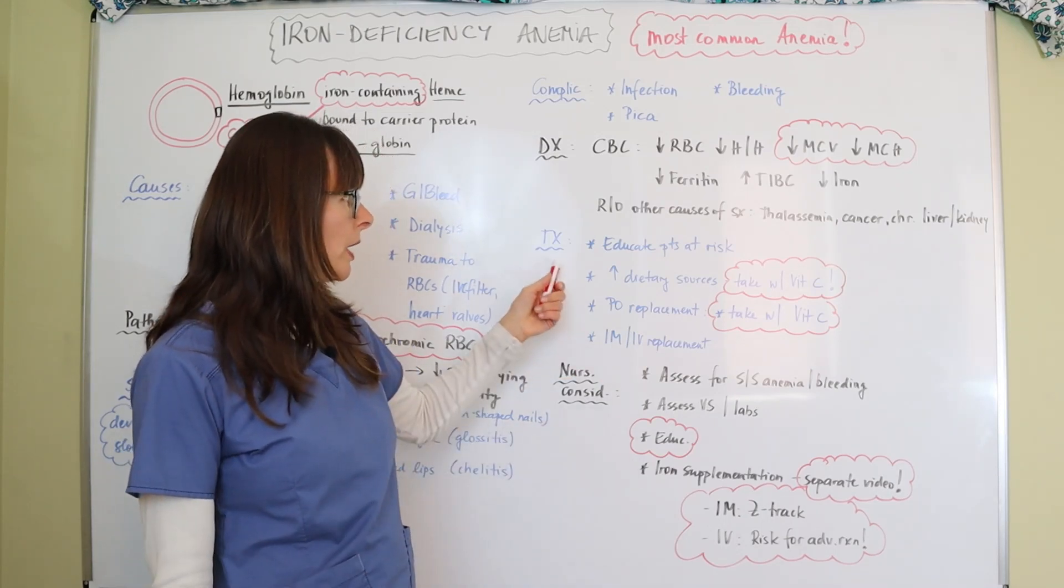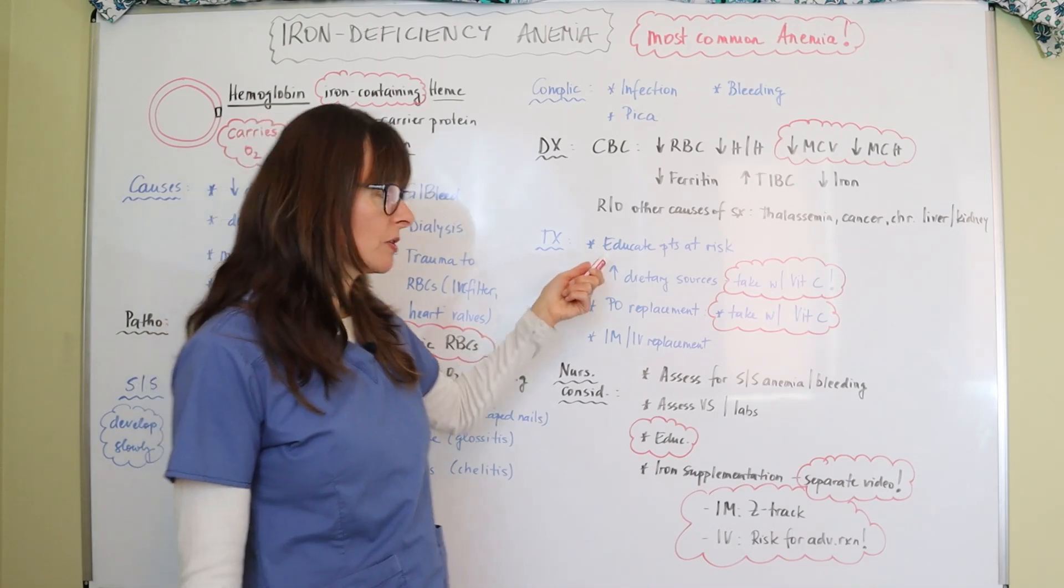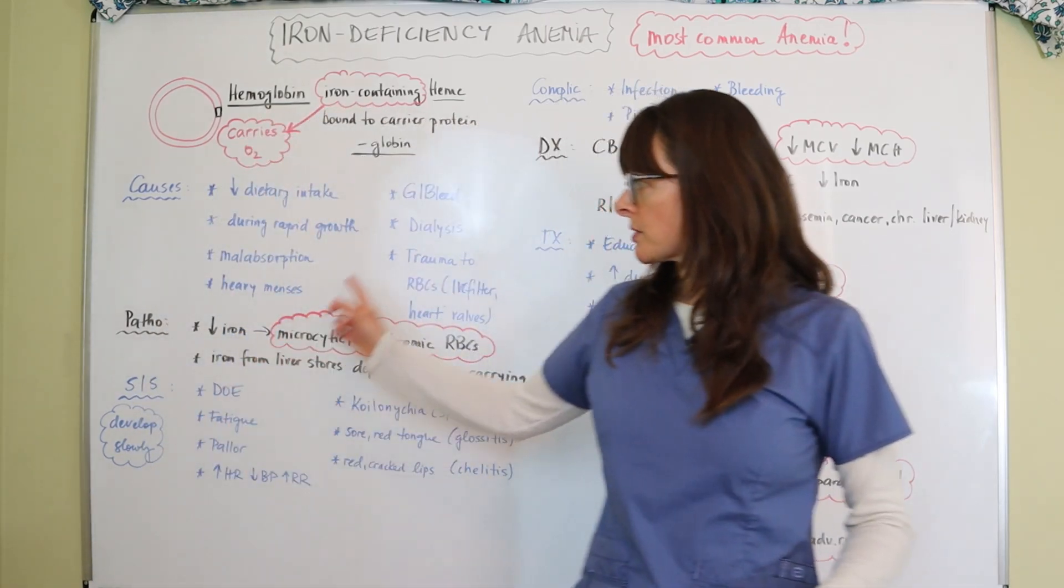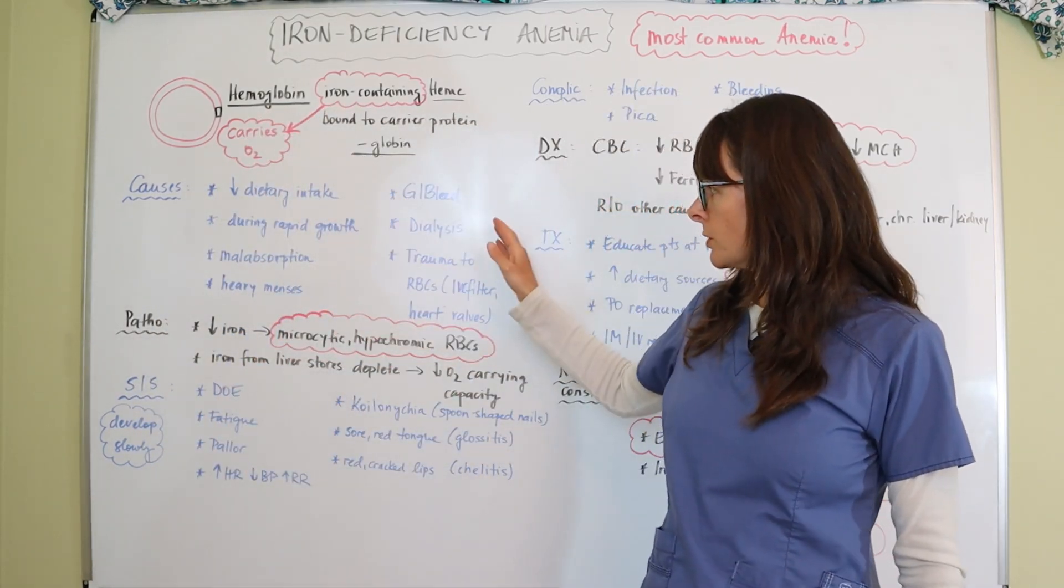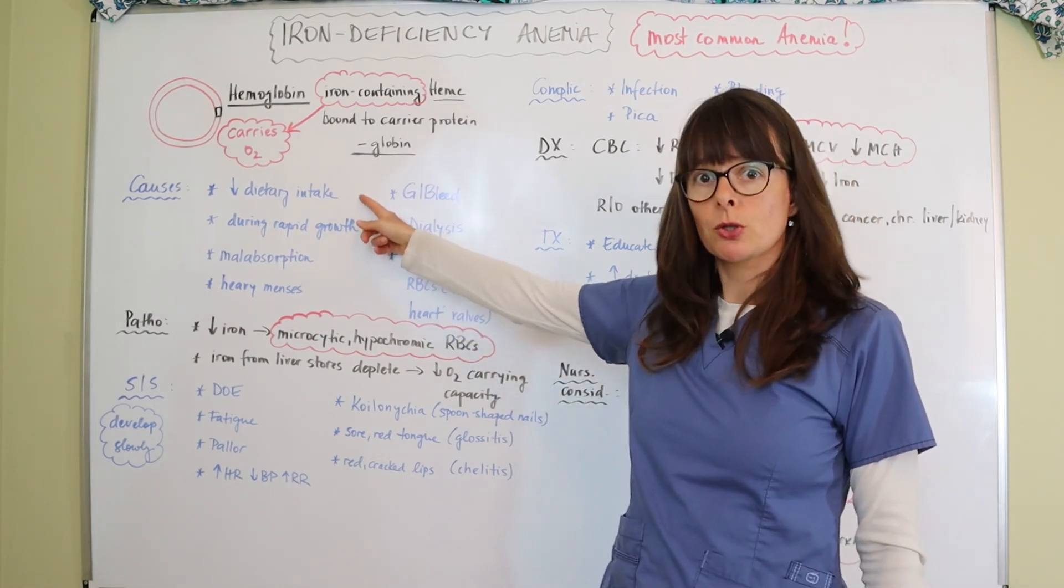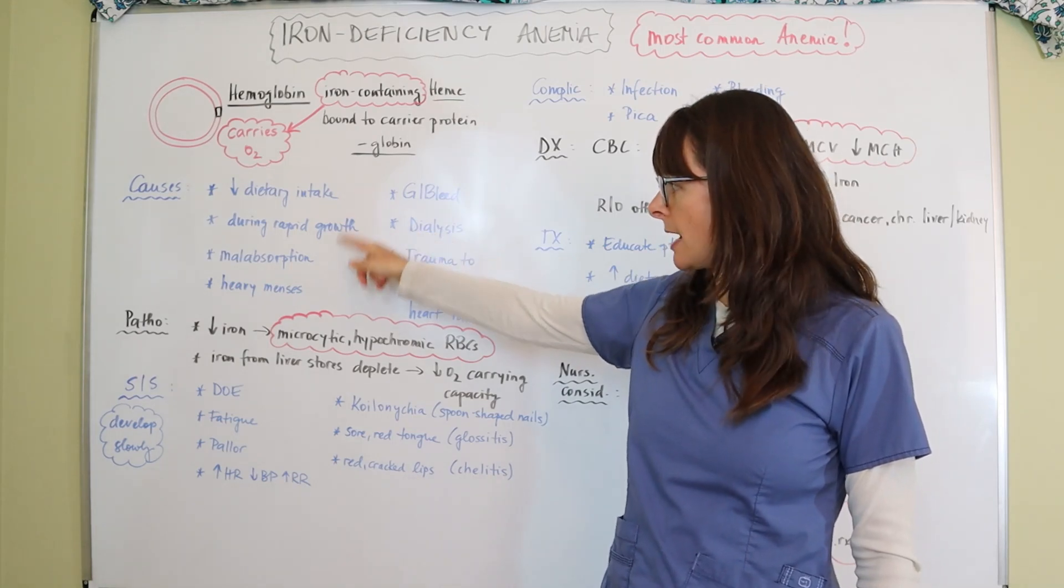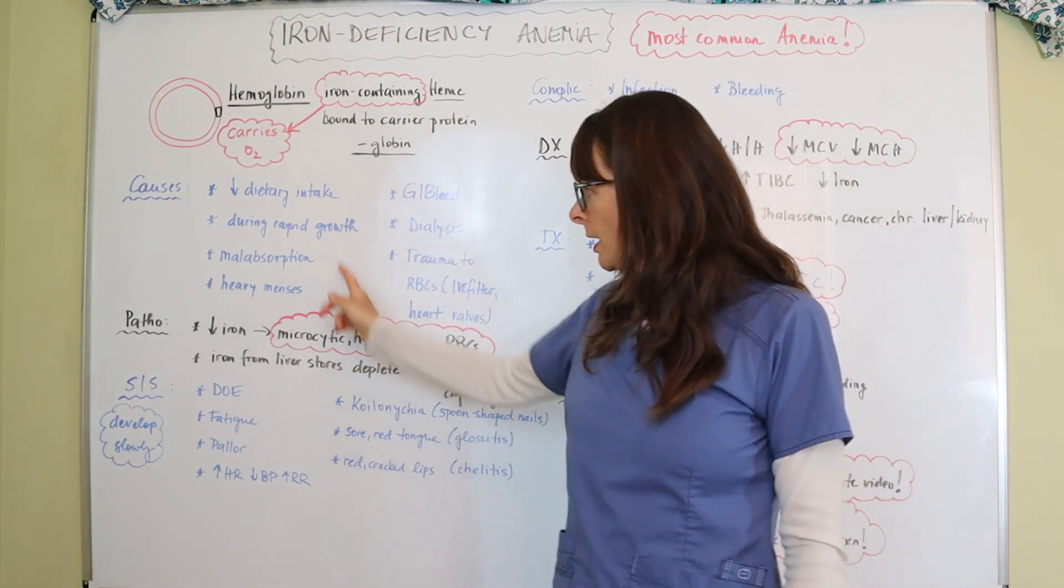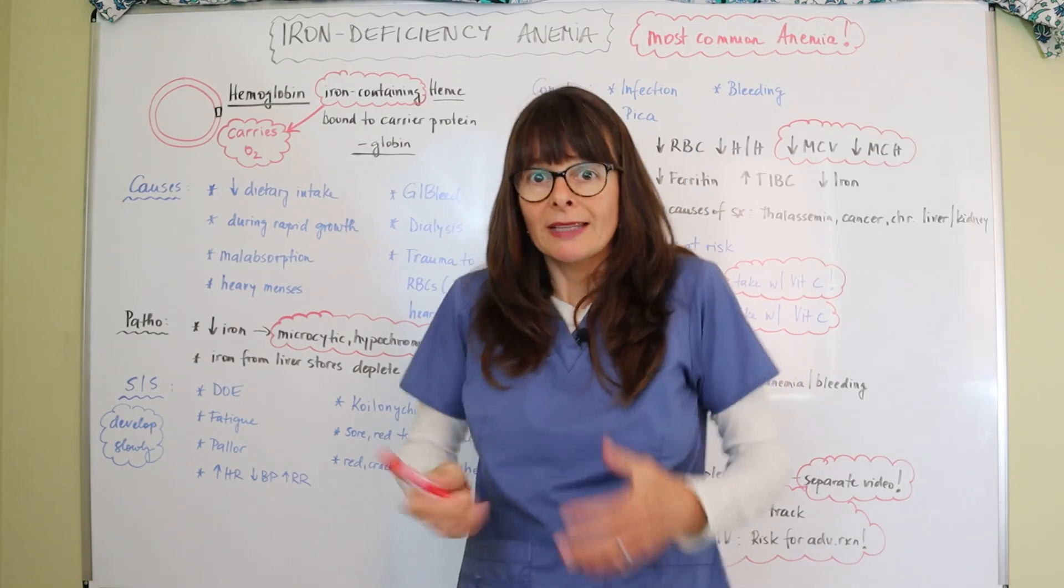So treatment, we always want to make sure we educate patients at risk, all these risk factors that we talked about, so dialysis patients, in particular patients with heart valves, we want to make sure patients eat a well-balanced diet, premenopausal women and those with malabsorption, that they are at risk for iron deficiency anemia.